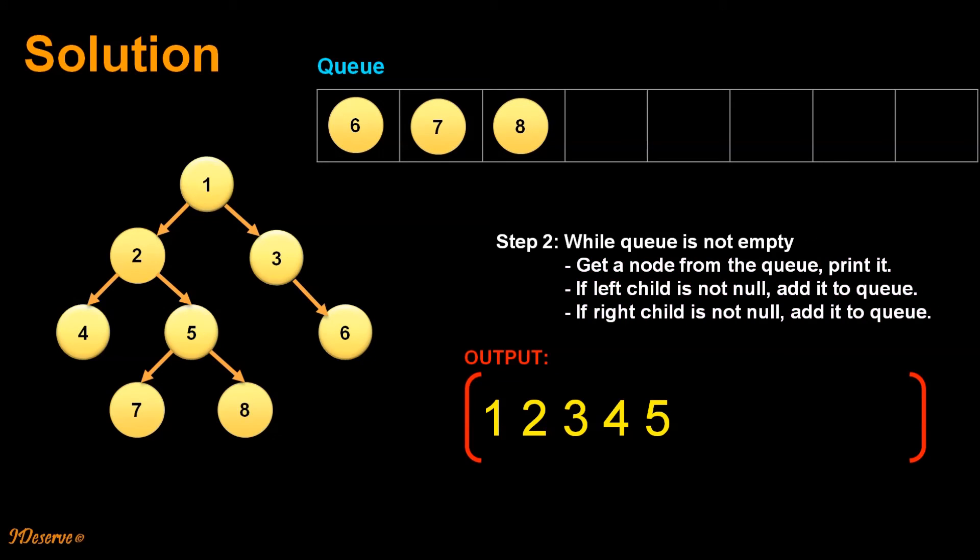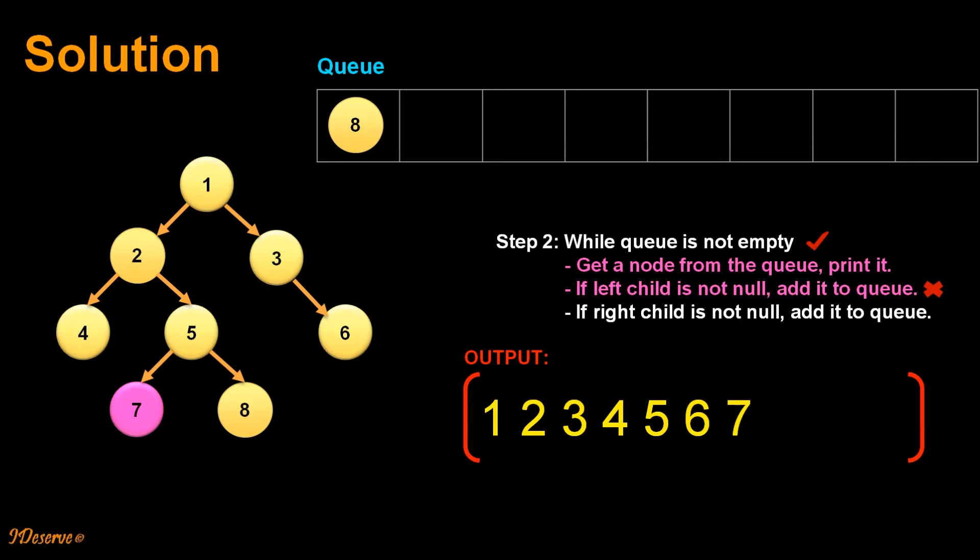Similarly we execute our next steps. Now since node 6, 7 and 8 are leaf nodes so nothing will get added to queue. So first 6 gets printed. In next iteration 7 gets printed and in final iteration node 8 gets printed.